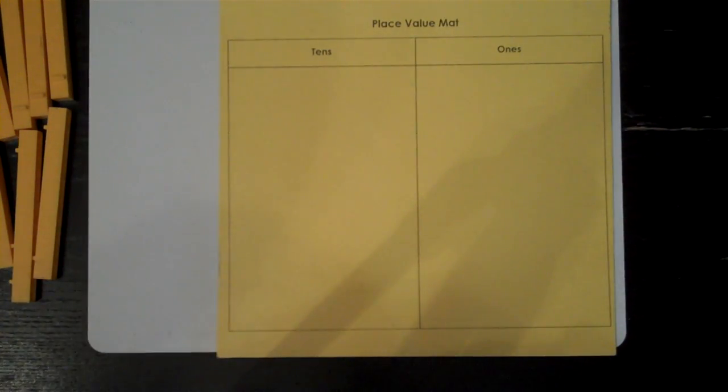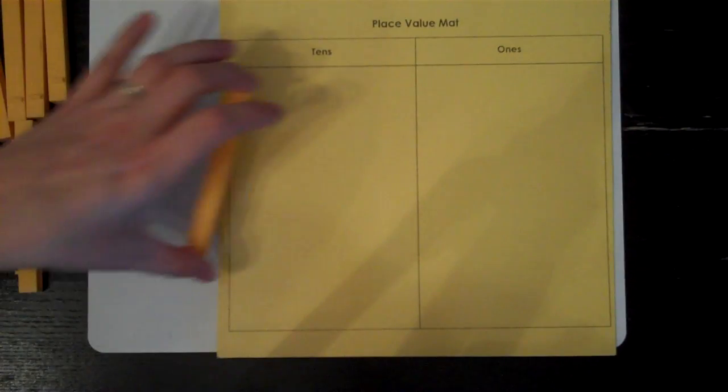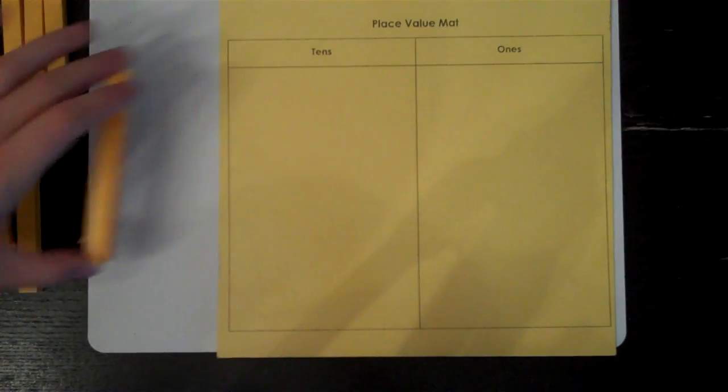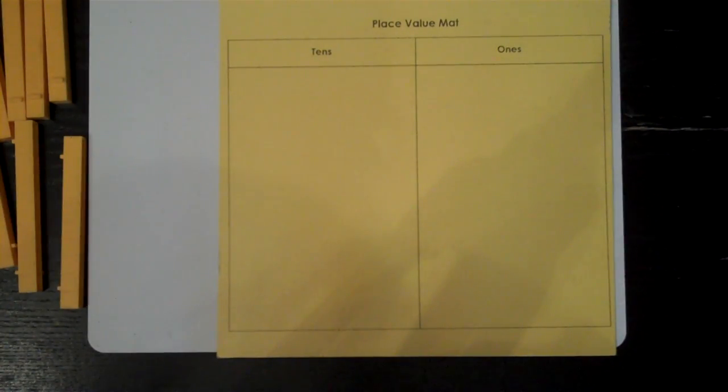In this video I'm going to go over subtraction with regrouping using base 10 blocks. You'll need a place value mat and some base 10 materials. If you don't have any at home, you can look in the video description and there should be a link to a PDF and you can print off what you need. Make sure you have lots of ones. Once you have your base 10 materials and your place value mat, you need a question.